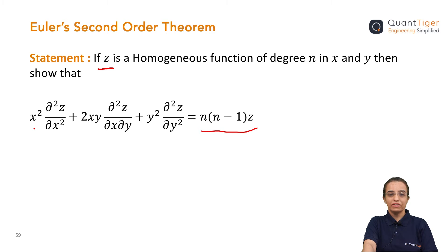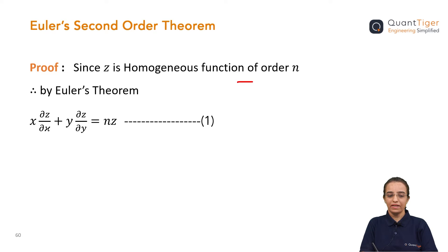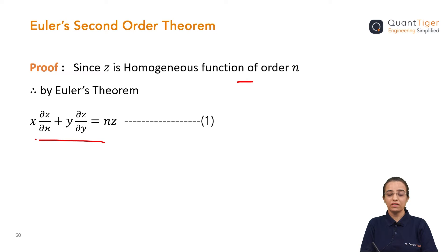Now we will start with the proof. So first, z is a homogeneous function in terms of x and y as given. By Euler's first order theorem, since it's a homogeneous function of order n, we can write x · ∂z/∂x + y · ∂z/∂y = nz. This is equation 1, written using Euler's first order theorem for two variables.